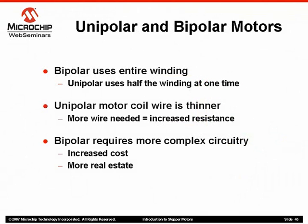Let's compare both winding configurations. Unipolar motors only allow current flow in half the winding, while bipolar offers bidirectional current flow. Since torque is related to winding current, bipolar motors will generate greater torque than unipolar motors. Furthermore, due to the fact that unipolar windings are thinner than bipolar motor windings, more wire is needed, thereby increasing the winding's resistance. This could cause increased power loss via the winding, potentially raising the temperature considerably.